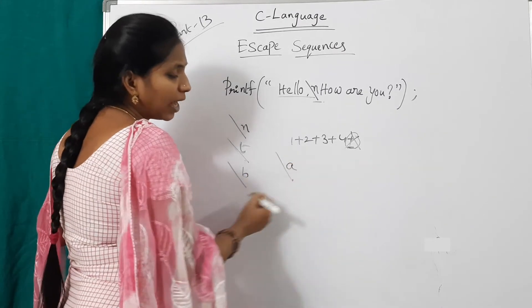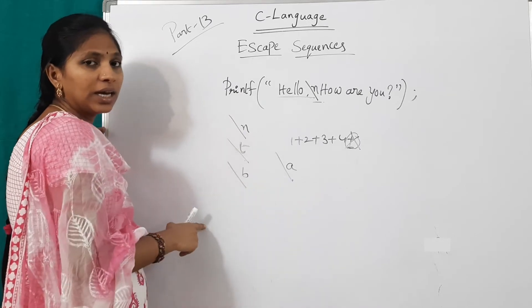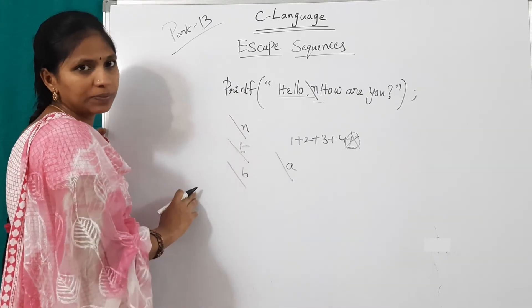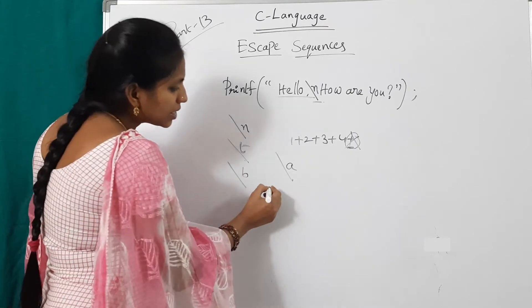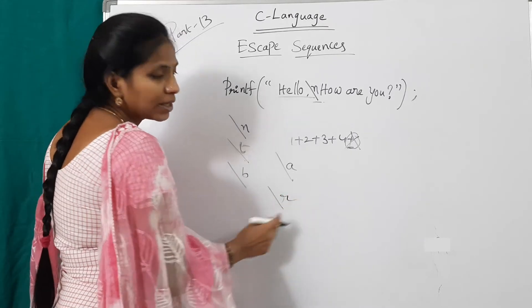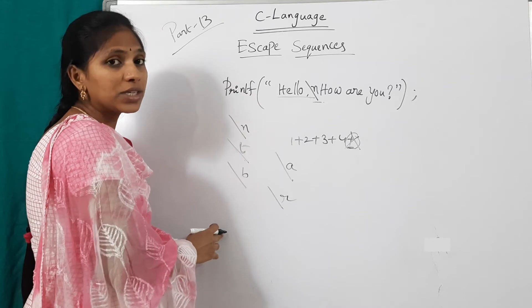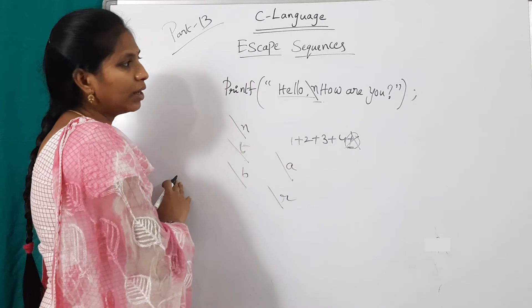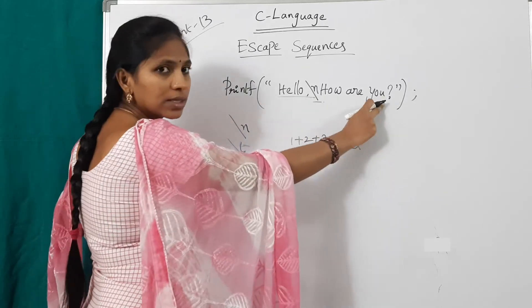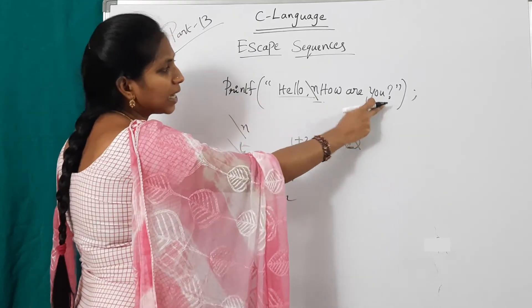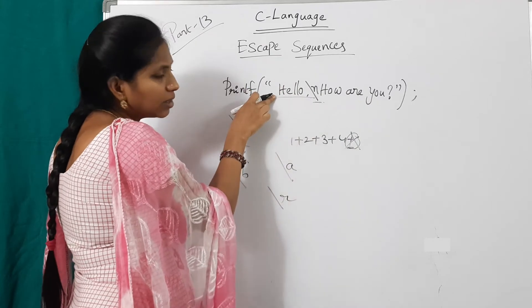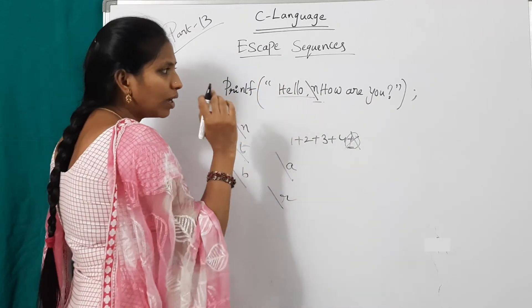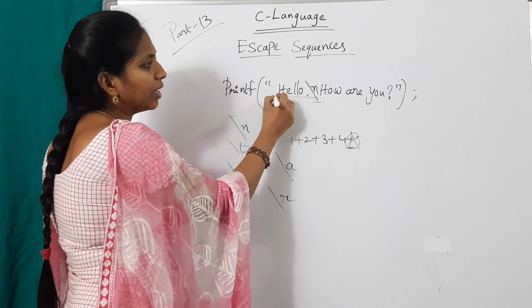And slash a. Slash a is for alert. It gives a beep sound. And slash r. Slash r is for carriage return. Means to place the cursor at starting of the same line. But suppose after displaying this sentence, I want to place the cursor at this sentence only at the starting, not at next line. In that case, use slash r. Cursor will blink here.